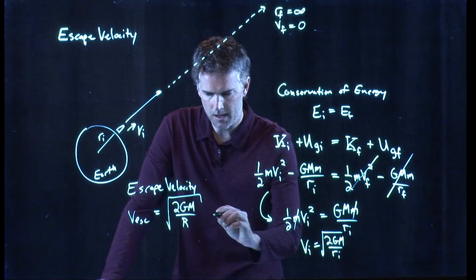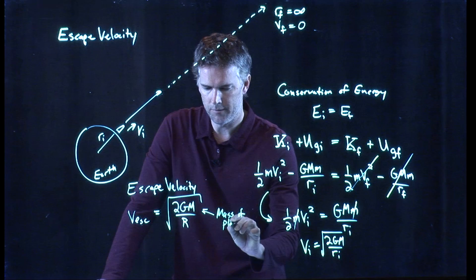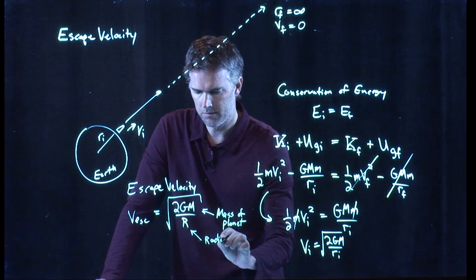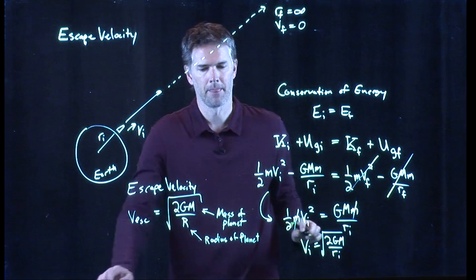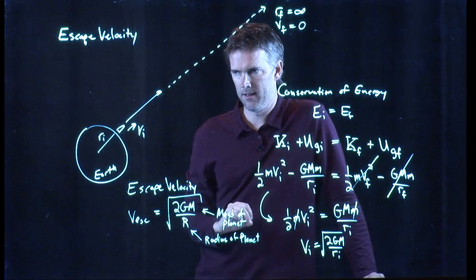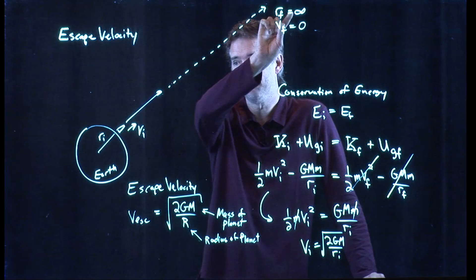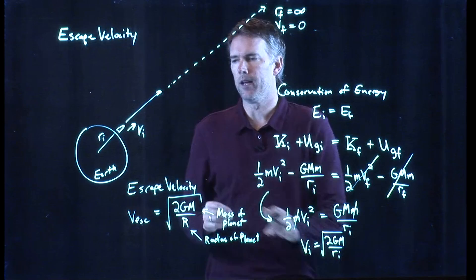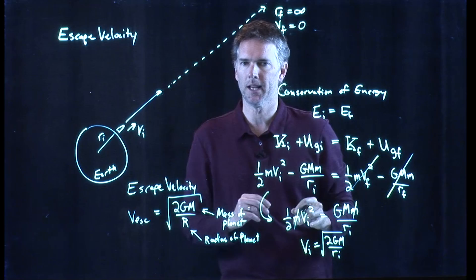Okay, M is the mass of the planet that you're on. If it's the Earth, then it's the mass of the Earth. R is the radius of the planet. And if you launch a projectile with that speed, it will fly away and never come back. If it's anything less than that, it will go out very far, but will eventually come back. And if it's anything more than that, then it will launch out to infinity and it will still have some excess kinetic energy when it gets out to infinity.